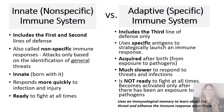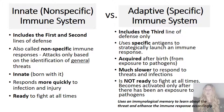The adaptive immune system is our third line of defense. It uses specific antigens to strategically launch an immune response. The adaptive immune system is acquired after birth due to exposure to different pathogens. It is much slower to respond to threats and infections than the innate immune system, and is not ready to fight at all times — it becomes activated only after there has been an exposure. Only the adaptive immune system has the ability to have memory, with an immunological memory to learn about threats and enhance immune responses for the future.